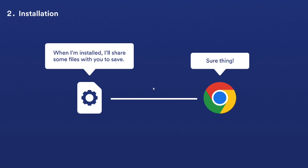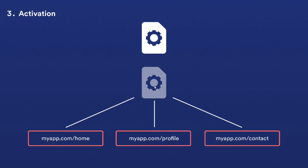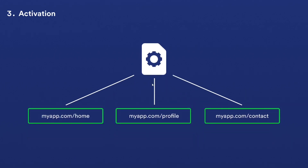Once the installation is complete, the service worker enters the activation phase. In this phase the new service worker takes control of any web pages that are under its scope. However, it does not immediately become active for handling events and network requests. If there is a previous version of the service worker already active, it will remain active until all the pages are closed. There is also a way to bypass this and immediately take control of pages, which I'll cover later.